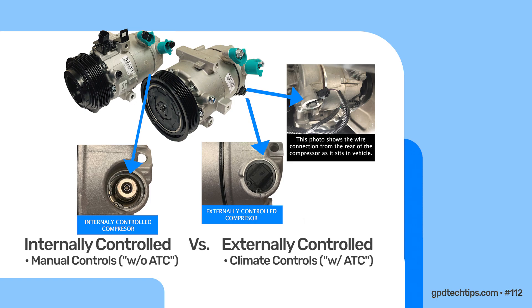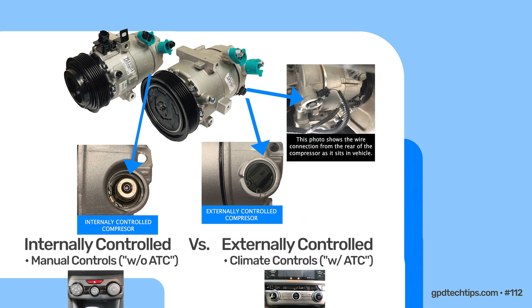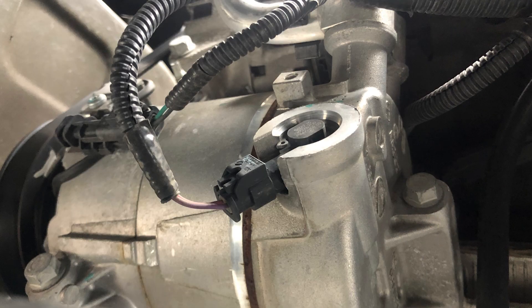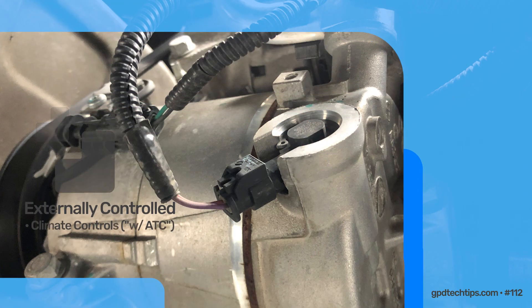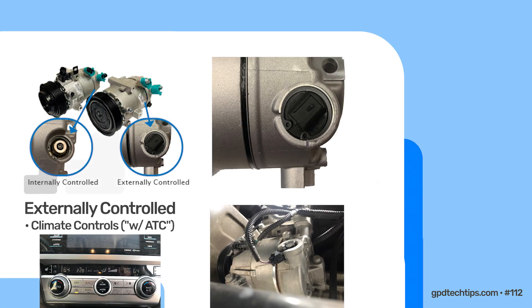Internally controlled compressors rely on the pressure in the crankcase of the compressor. If the vehicle has climate controls, as shown with wired connections at the rear of the compressor, it is an externally controlled compressor. Externally controlled compressors will have wires coming out of the rear of the compressor. These wires communicate information from the ECU to properly adjust the angle of the swash plate.